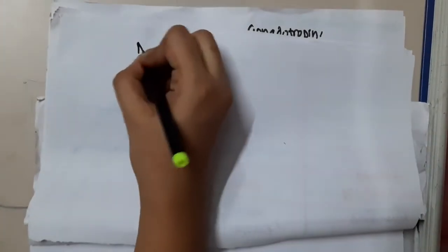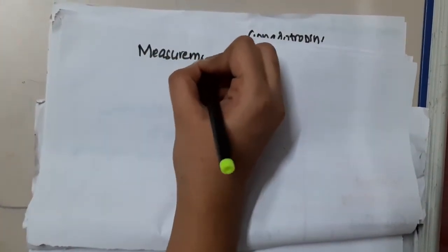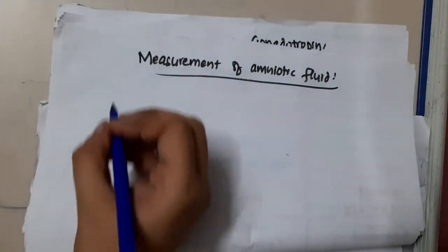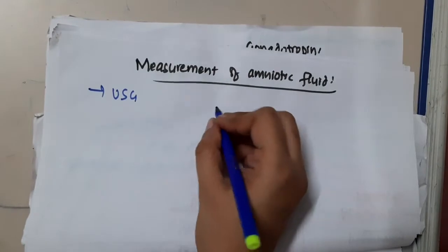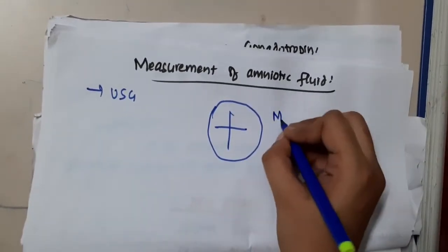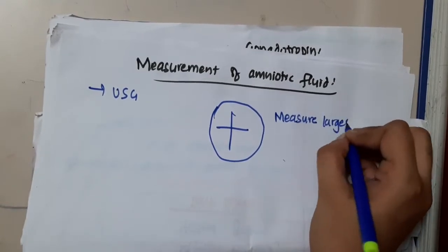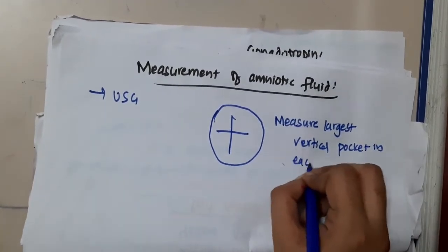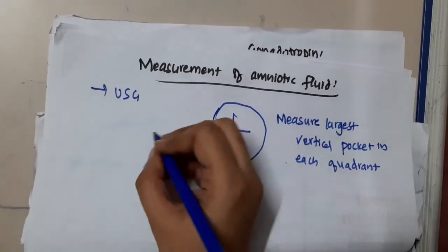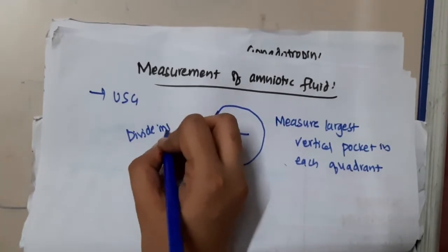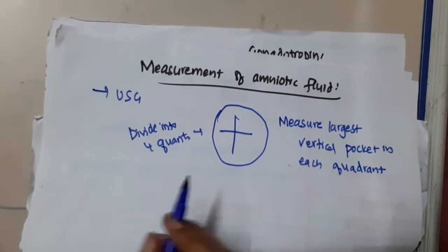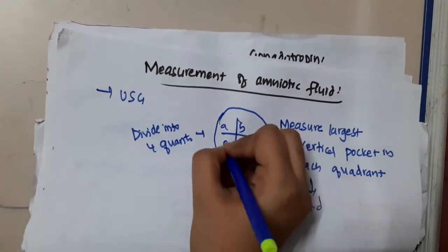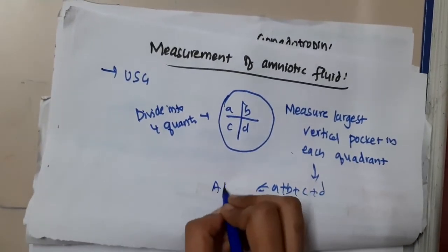The measurement of amniotic fluid is done by ultrasonography. Divide the abdomen into four quadrants and measure the largest vertical pocket in each quadrant. Add them — A plus B plus C plus D — and this is the amniotic fluid index.